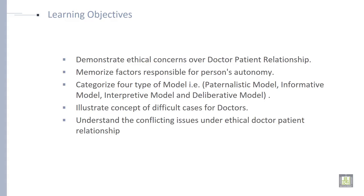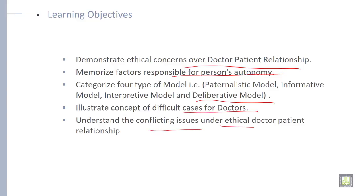The learning outcomes of this lecture are: demonstrate ethical concern over doctor-patient relationship, memorize factors responsible for a person's autonomy, categorize four types of models — paternalistic model, informative model, interpretive model, and deliberative model — and illustrate the concept of difficult cases for doctors and understand the conflicting issues under ethical doctor-patient relationship.